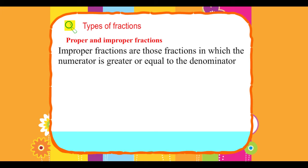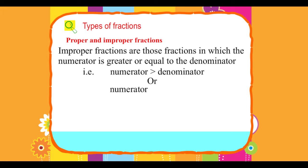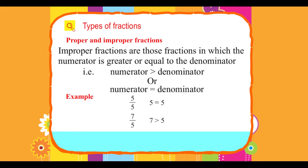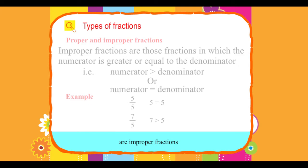Improper fractions are those fractions in which the numerator is greater than or equal to the denominator. That is, numerator greater than denominator or numerator equal to denominator. Example: 5 upon 5 — 5 equals 5; 7 upon 5 — 7 greater than 5. So 5 upon 5 and 7 upon 5 are improper fractions.